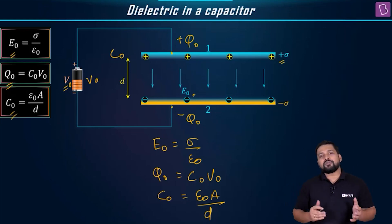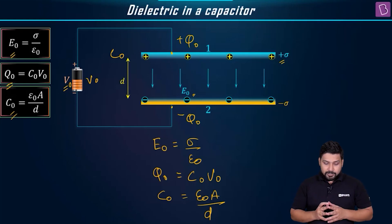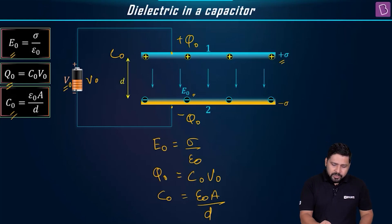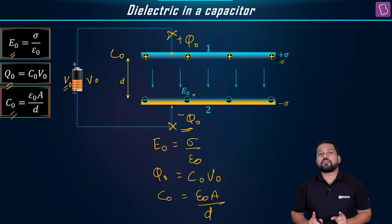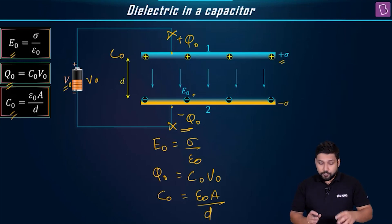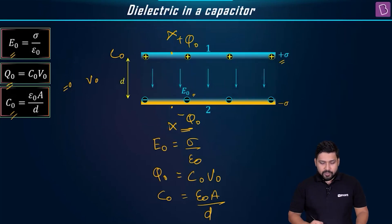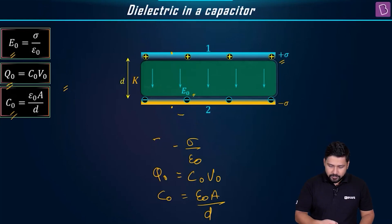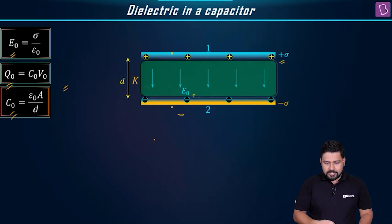Now we are going to remove the battery, and this is very important. By removing the battery, what will happen? By removing the battery, whatever charge we have on the capacitor is going to remain the same. The charge will not change. If you remove the battery, the charge is going to still be Q₀ — the charge still remains equal to Q₀.